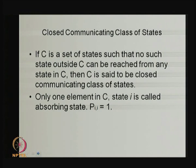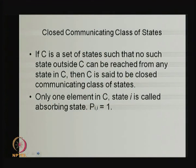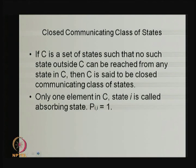If a closed communicating class has only one element and you cannot include any additional state to keep it closed, then that state is called an absorbing state — meaning the one-step transition probability P_ii equals 1. So there are two ways to have an absorbing state: either P_ii equals 1, or the closed communicating class has only one element. Using closed communicating classes, we distinguish reducible from irreducible Markov chains.